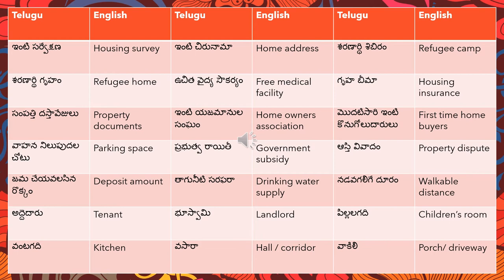'Uchita vaidhya saukaryon' means free medical facility — 'uchita' means free, 'vaidhya' means medical, and 'saukaryon' means facility. Breaking words down like this makes it easier to translate faster. Going through these words repeatedly also helps recall.